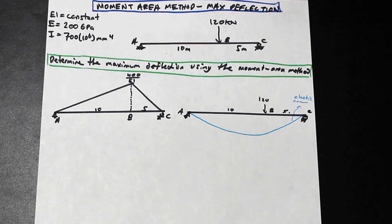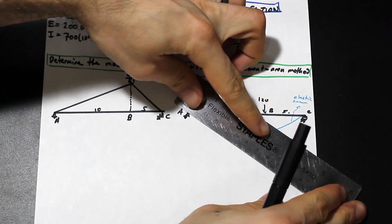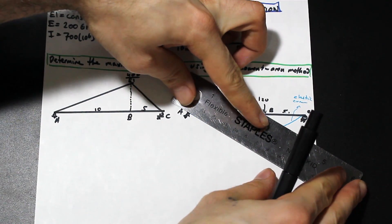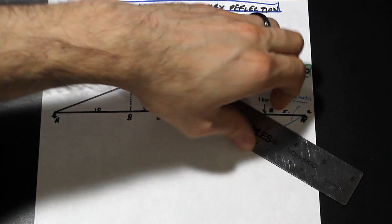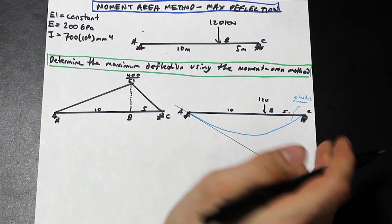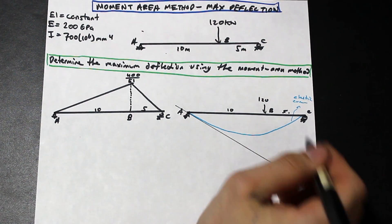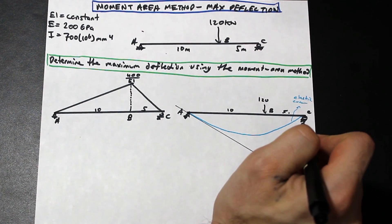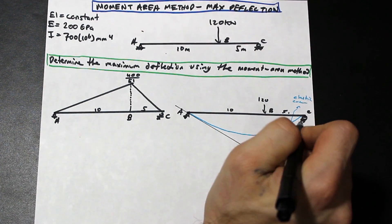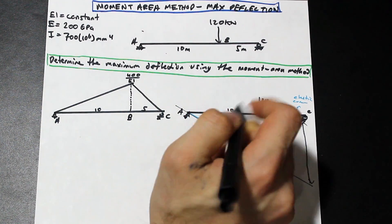We're drawing our tangent line at point A. You'll notice a continuing trend in these simply supported beam questions: you can always find theta_A given the fact that at C the deflection is zero, so the elastic curve is zero. This entire quantity is simply delta_CA, which is what we covered in the previous question. Theta_A is what we're now looking for.